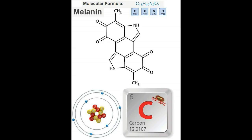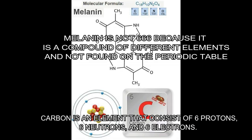So here we have the difference between carbon and melanin, in which carbon is an element that consists of six protons, neutrons, and electrons, and melanin consists of carbon, hydrogen, oxygen, and nitrogen. That will make melanin a compound.